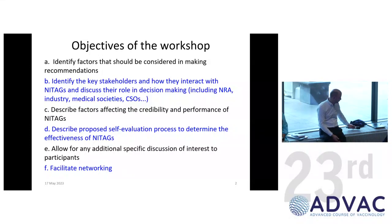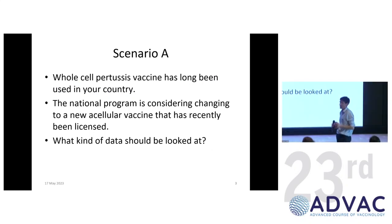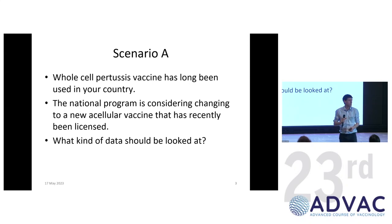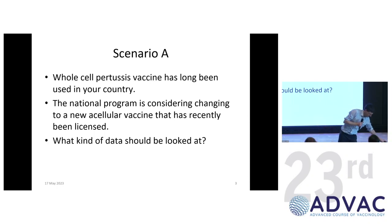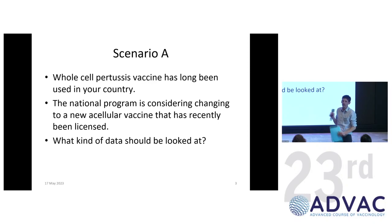Let's get going. We have six different scenarios with about 15 minutes each. The first scenario: a whole-cell pertussis vaccine has long been used in your country, and the national program is considering changing to a new acellular vaccine that has recently been licensed. What kind of data should be looked at?